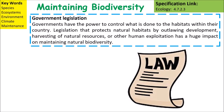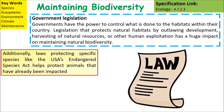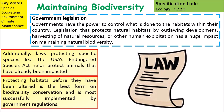Governments have the legal power to control what is done to habitats within their country. Legislation protects natural habitats by outlawing development, harvesting of natural resources, or other human exploitation such as building or filling in lakes. Laws protecting specific areas, like the USA's Endangered Species Act, help protect animals that have already been impacted. Protecting habitats before they have been altered is the best form of biodiversity conservation, and is most successful when implemented by government regulations.